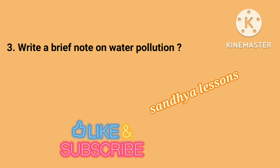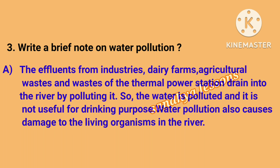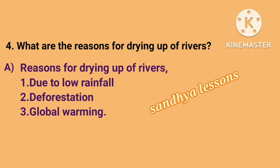Third question: Write a brief note on water pollution. The effluents from industries, dairy farms, agricultural wastes, and wastes of the thermal power station drain into the river, polluting it. The water becomes polluted and is not useful for drinking. Water pollution also causes damage to the living organisms in the river. Fourth question: What are the reasons for drying up of rivers? Reasons for drying up of rivers are due to low rainfall, deforestation, and global warming.